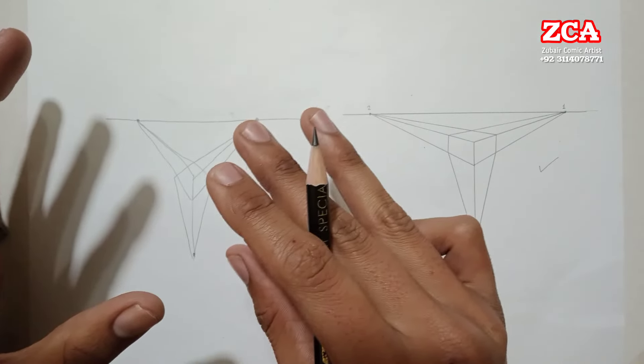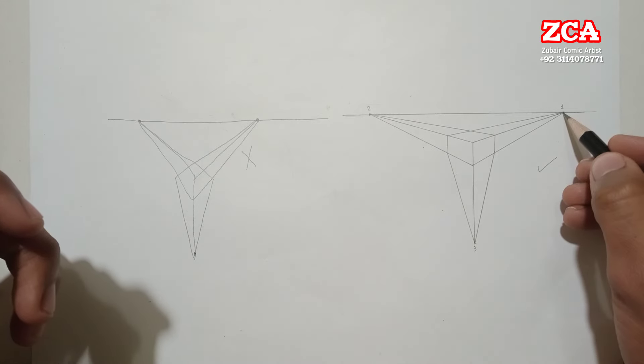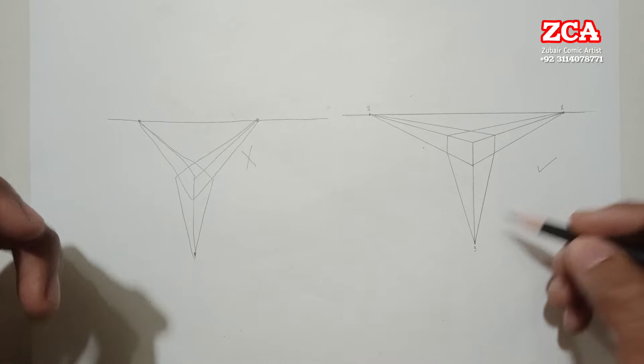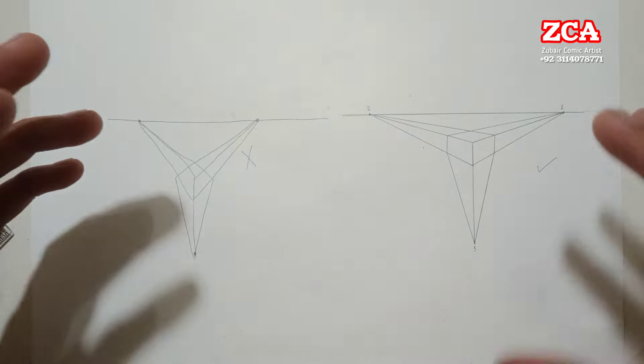You understand? And this is the right way of drawing: first vanishing point, second vanishing point, and third vanishing point. You can see, this is the right way. You can compare.